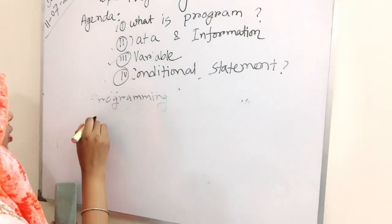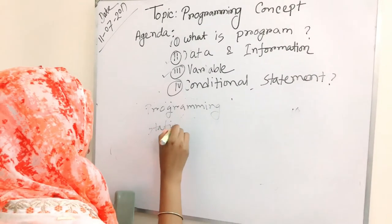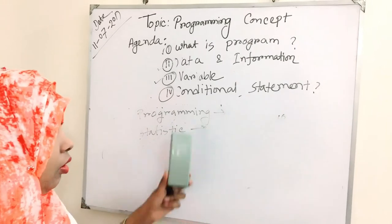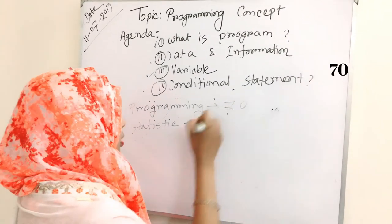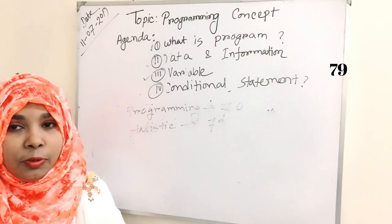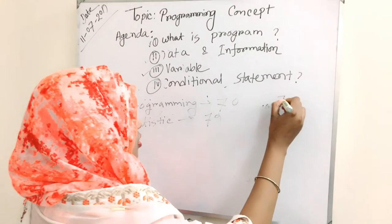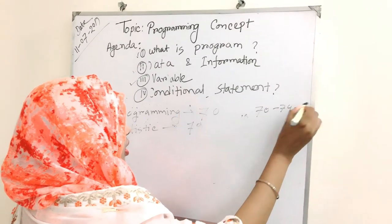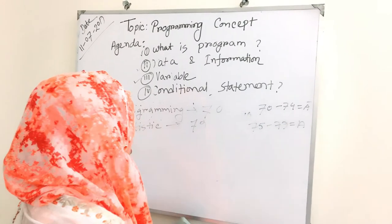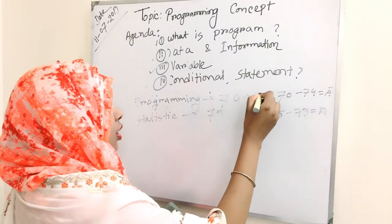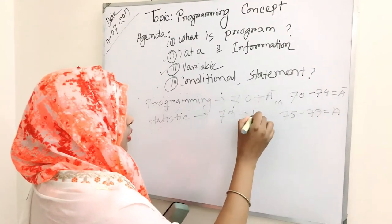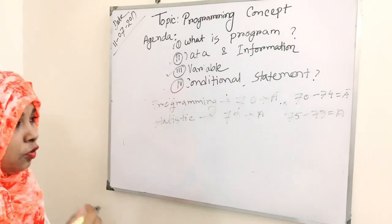In programming and statistics, you got 70 in programming and 79 in statistics. From your university rule, 70 to 74 is A minus, 75 to 79 is A. That means you get A minus in programming and A in statistics.